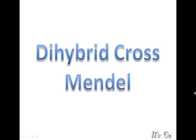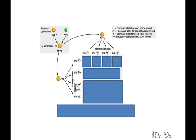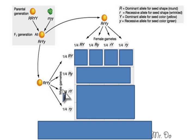Dihybrid cross, Mendel. So here we have a different one. We have one where Mendel did. So he took one with a round yellow pea in the parent generation and he crossed it with a wrinkled green pea.